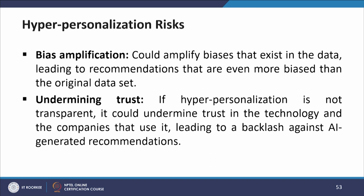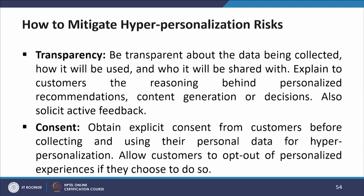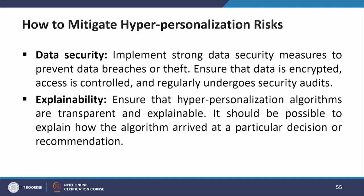Undermining trust — if hyper-personalization is not transparent, it could undermine trust in the technology and the companies that use it, leading to a backlash against AI-generated recommendations. To mitigate risks: be transparent about the data being collected, how it will be used, and who it will be shared with. Explain to the customer the reasoning behind personalized recommendations and solicit active feedback. Obtain explicit consent from customers before collecting and using their personal data, and allow customers to opt out of personalized experiences. Implement strong data security measures to prevent data breaches — ensure data is encrypted, access is controlled, and security audits are conducted regularly.